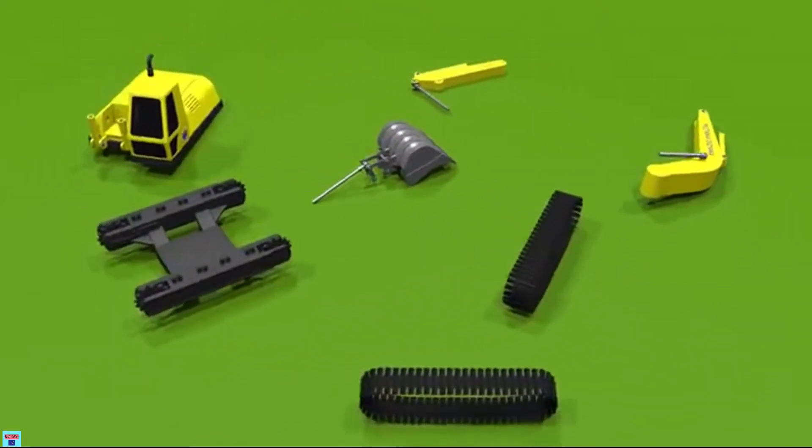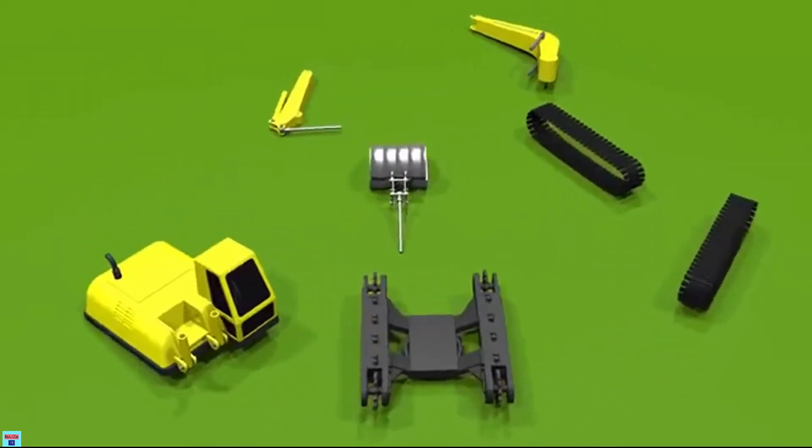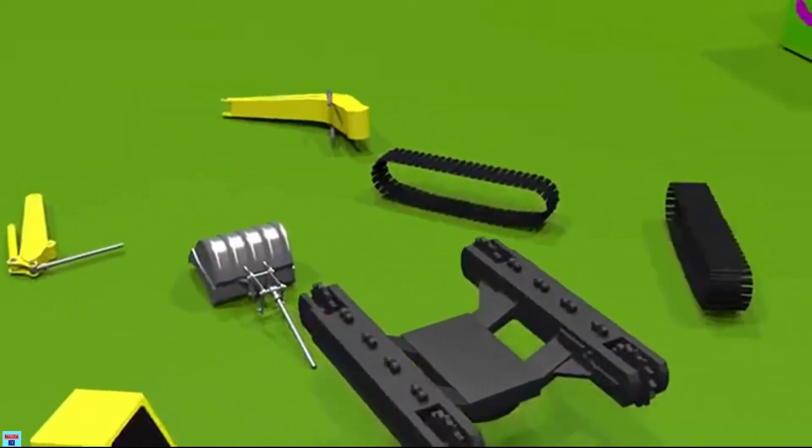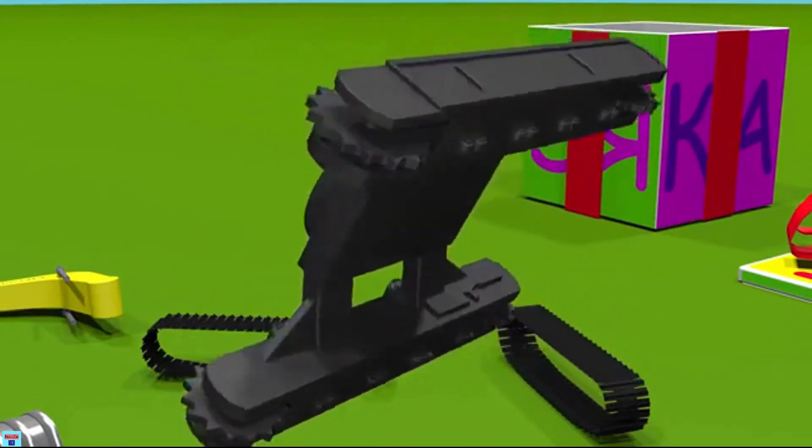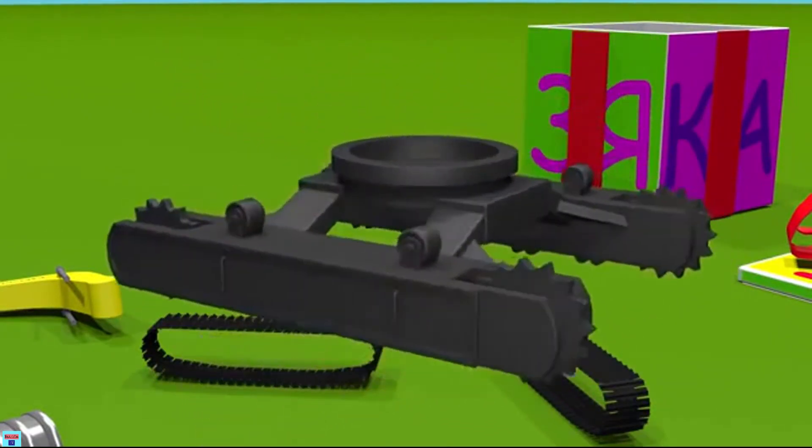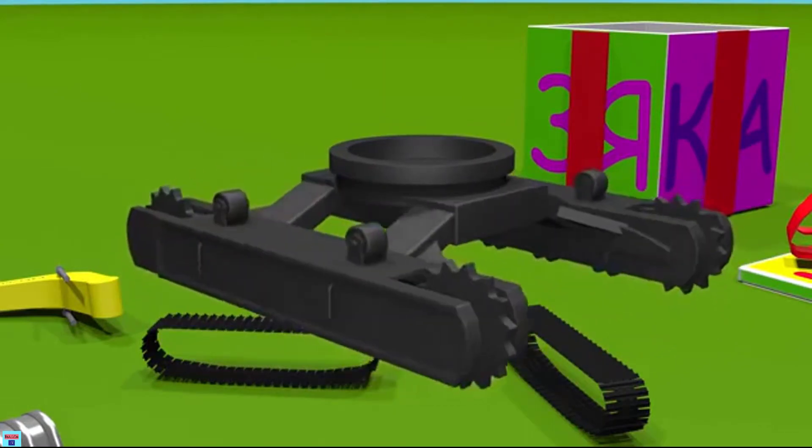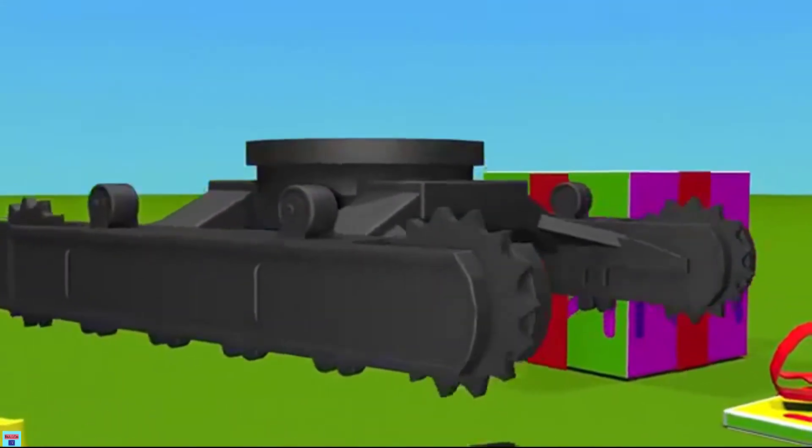Let's begin with something that helps the excavator to travel. This is the track frame. It has sprockets and rollers. The sprockets look like stars.